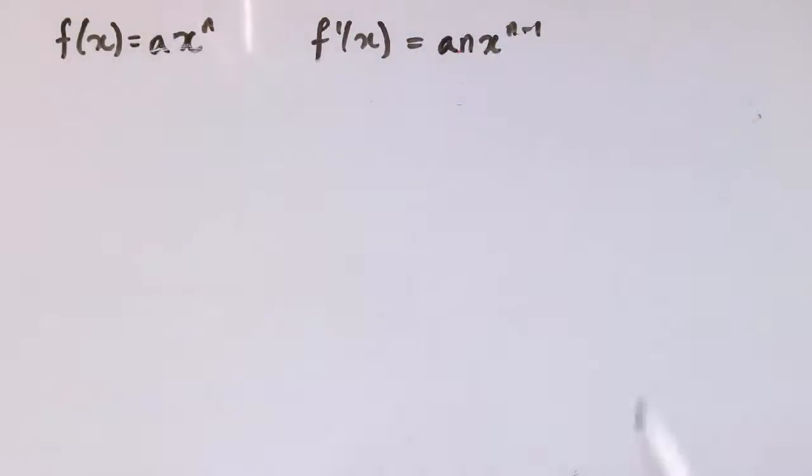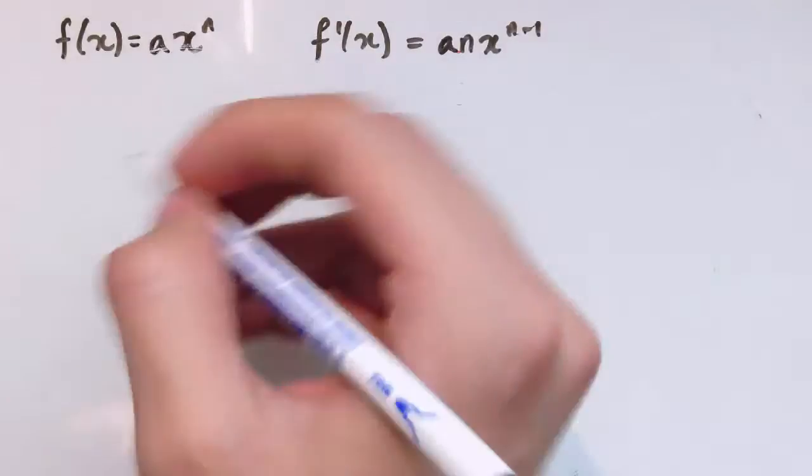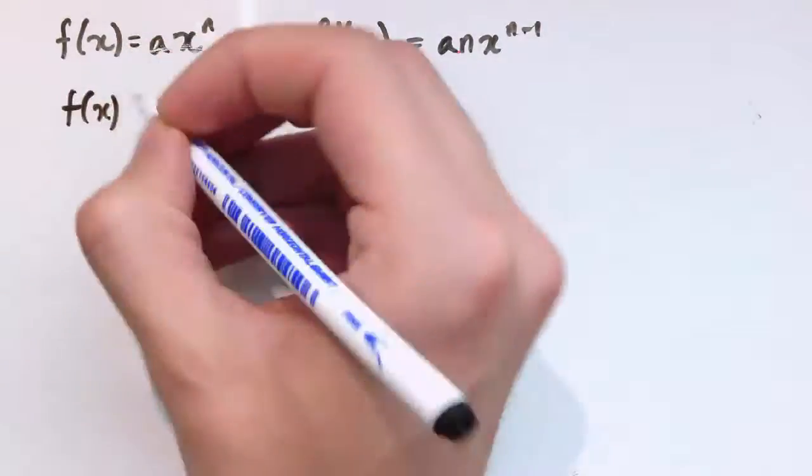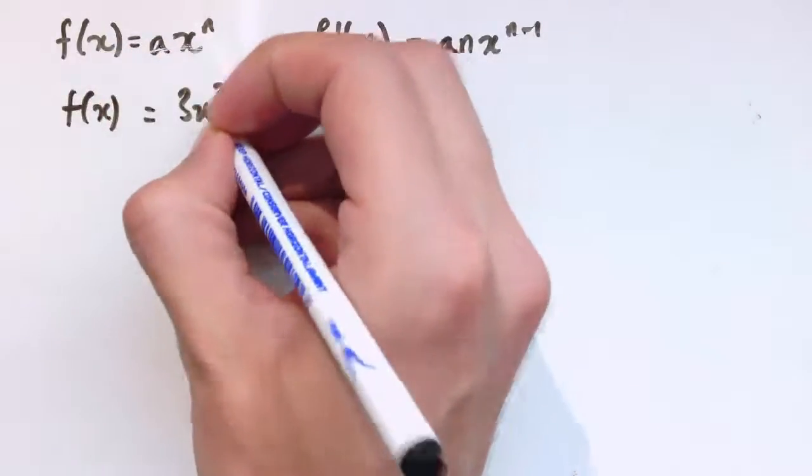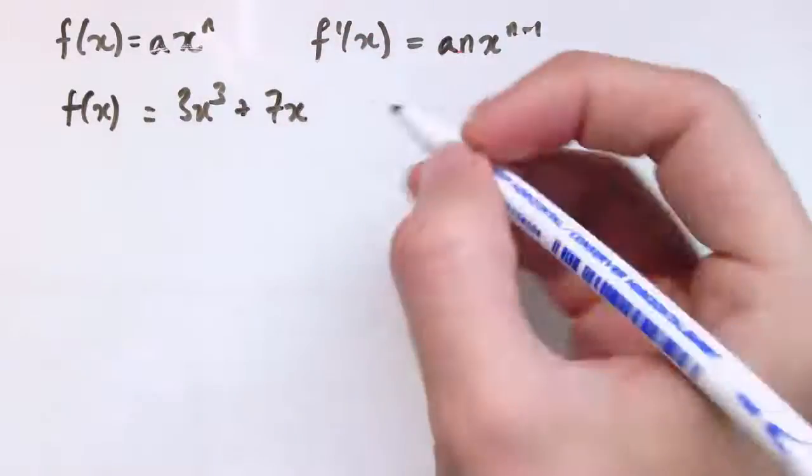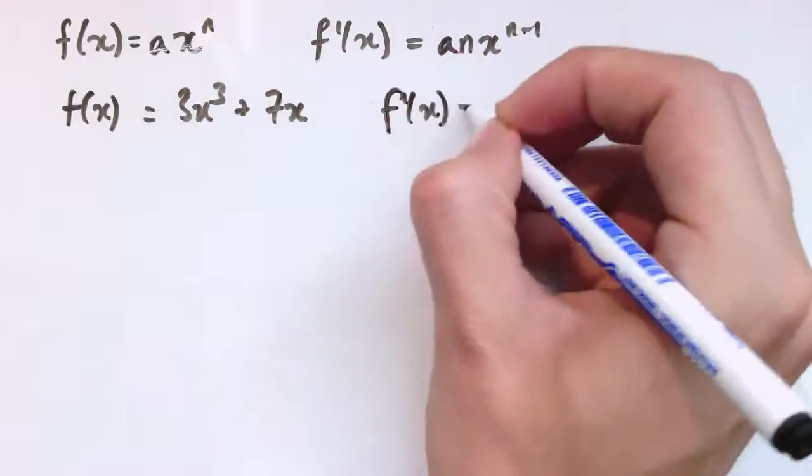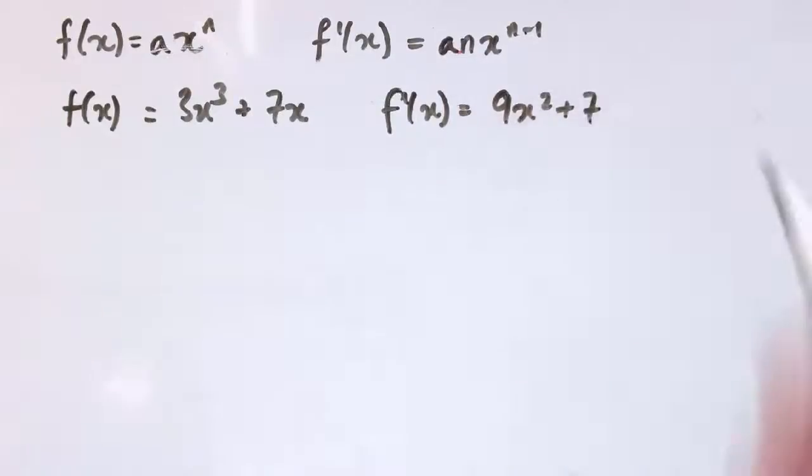Look at the previous video if you're not sure how that works, but I'm going to assume you're reasonably happy if I give you something like f(x) equals 3x cubed plus 7x, that you would tell me that the derivative is 9x squared plus 7. If not, go back to that previous video.